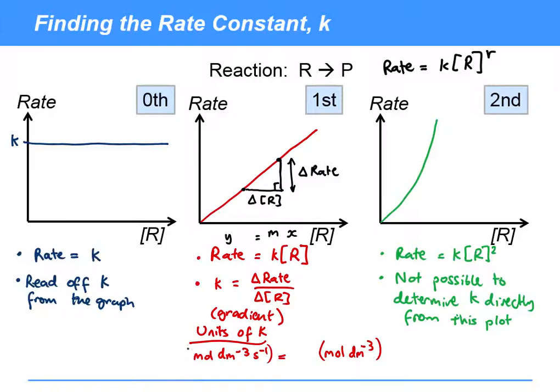So if we think about what the units of K are—this is for concentration, that's for rate—then the units of K are just going to be whatever is missing on this side. In this case it's just going to be seconds to the minus one. So units of K are seconds to the minus one.